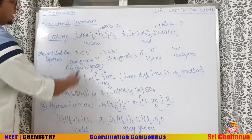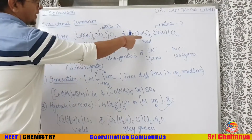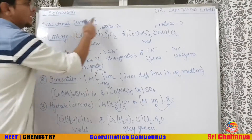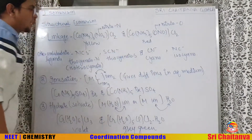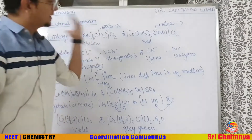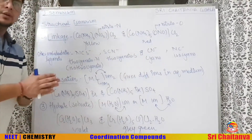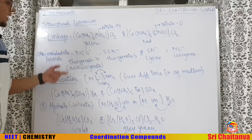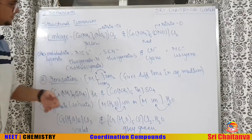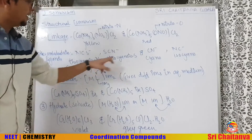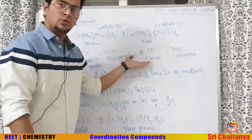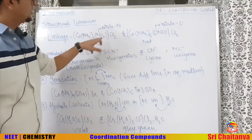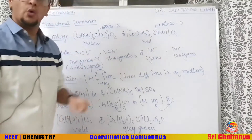In this example, the yellow color complex differs from the red color complex because in one, nitrogen is directly bonded to the central atom, while in the other, oxygen is bonded to the central atom. To identify linkage isomerism, simply search for ambidentate ligands: NCS⁻ (thiocyanato-N or isothiocyanato) and SCN⁻ (thiocyanato-S). Similarly, NO₂⁻ is nitrito-N and ONO⁻ is nitrito-O, where N and O represent the donor atoms.